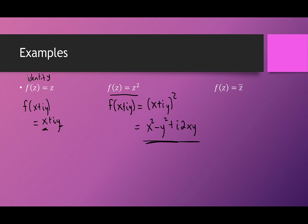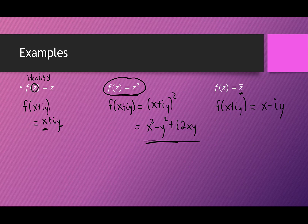Lastly, we have the conjugate function. If we substitute X plus iY, we get X minus iY — again, a function of two variables. Because we have different representations of complex numbers, this induces different representations of our complex functions. Instead of viewing complex functions as a function of Z, a single variable, we can view it as a function of two variables and use our Calc 3 knowledge to our benefit.